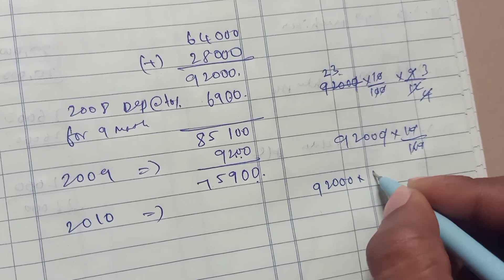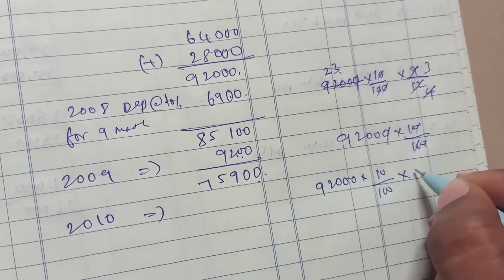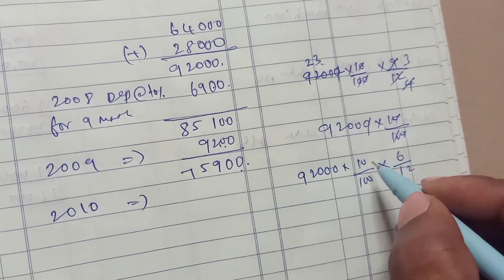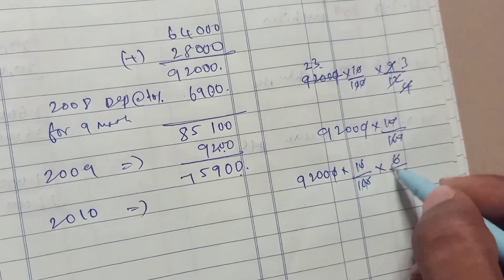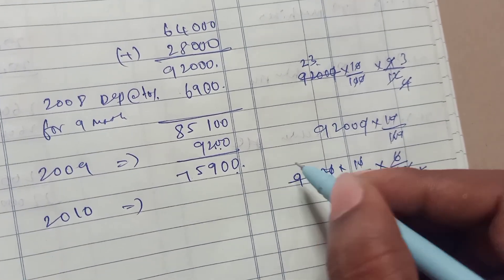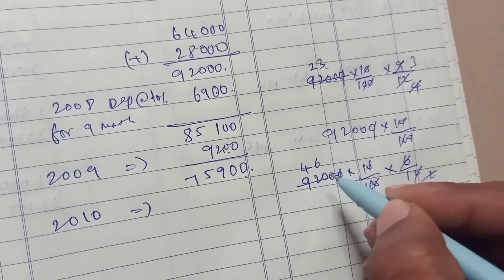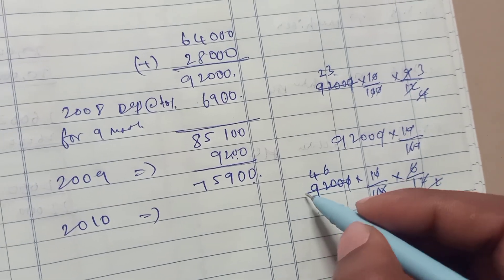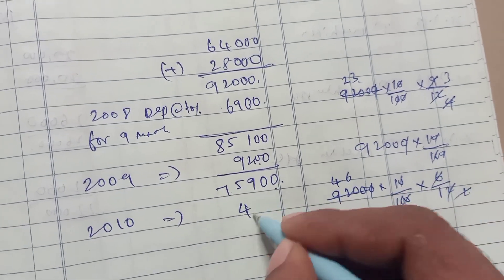10% on $92,000 total cost for 6 months. Depreciation is $4,600.